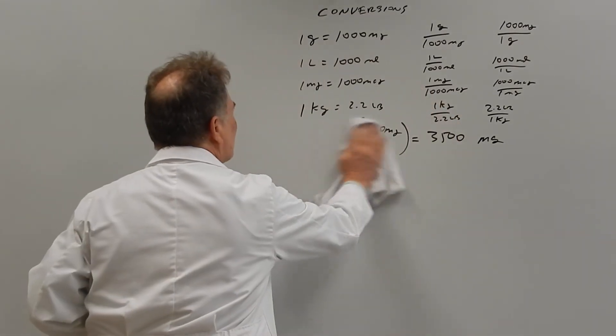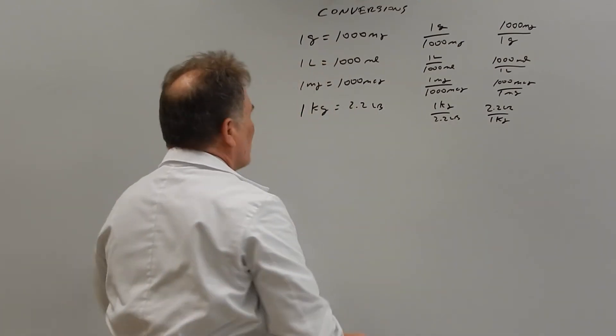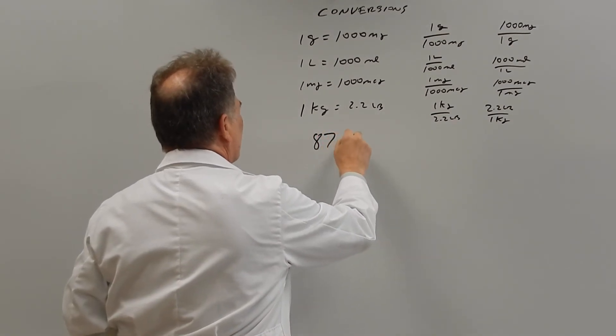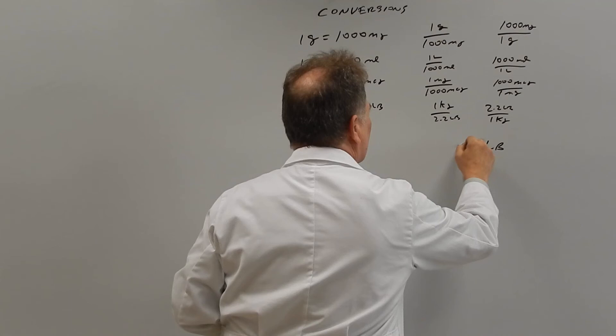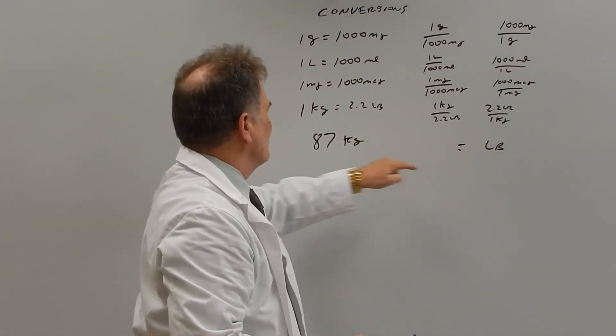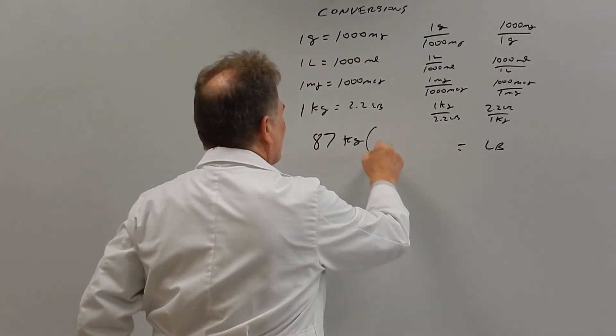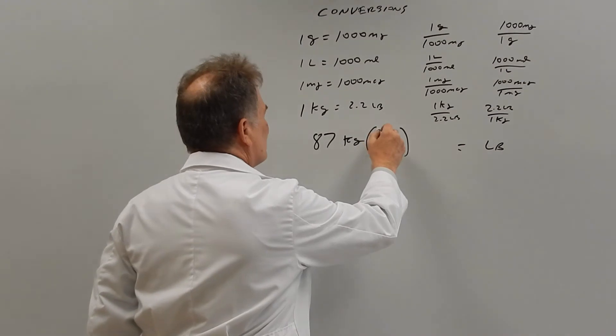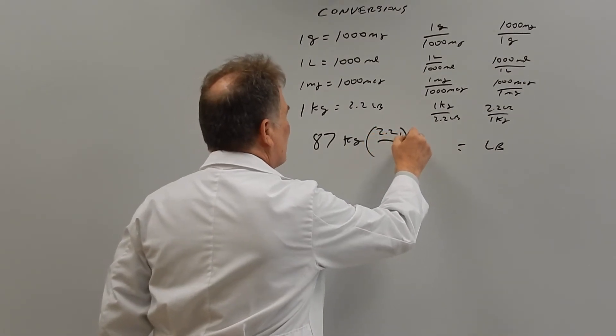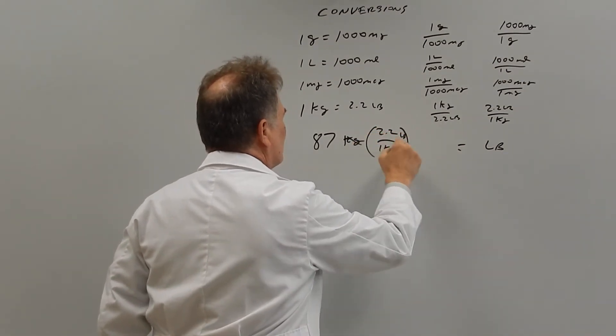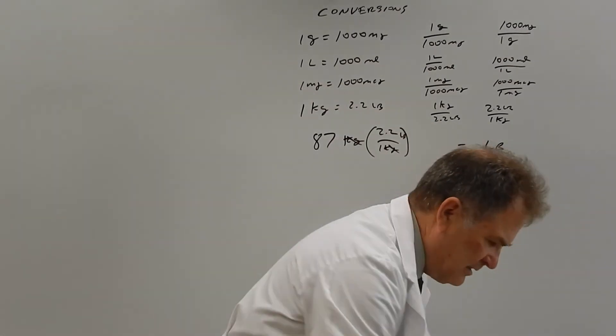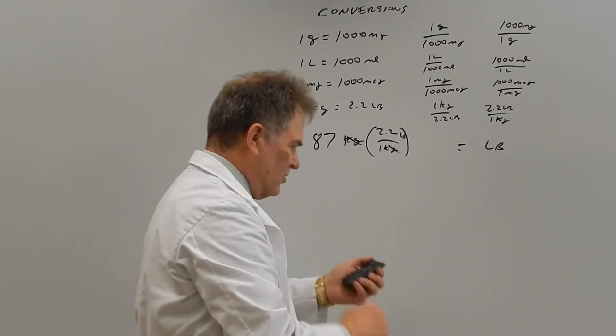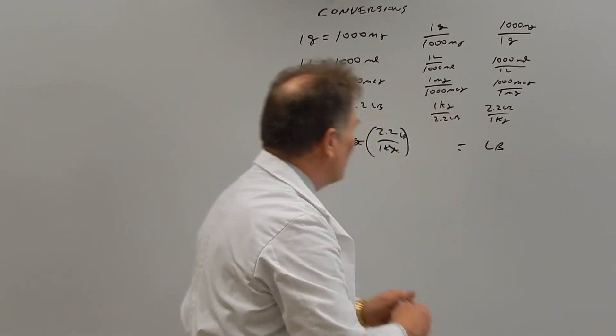So let's do just one changing kilograms to pounds. Let's say someone is 87 kilograms, and we want pounds. So you write down what you're given to start with, and then the ratio. So in this case, we need pounds on top and kilograms on the bottom. So 2.2 pounds for one kilogram. That works out to 87 times 2.2, so 191.4 pounds.